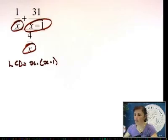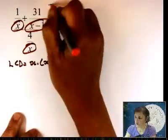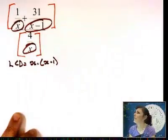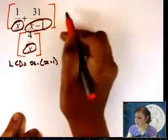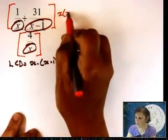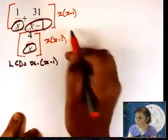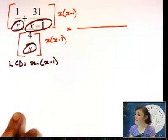What do you do? You put brackets on top, brackets at the bottom. Then you write your LCD. x times x minus 1, x times x minus 1. The goal is to get rid of some of the fractions.